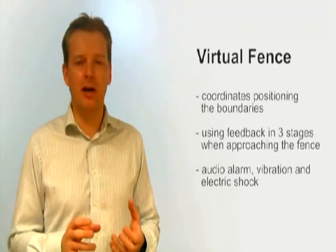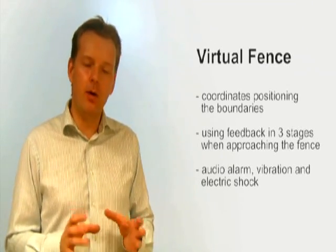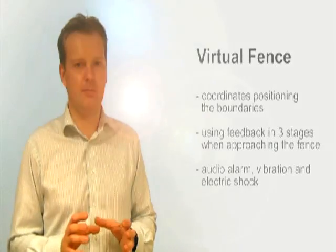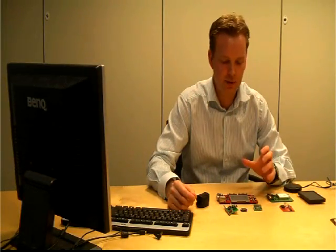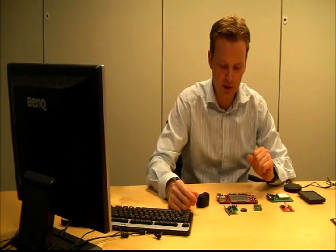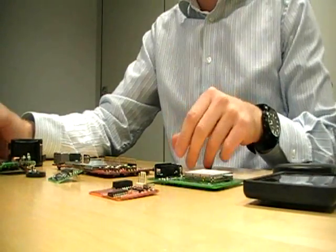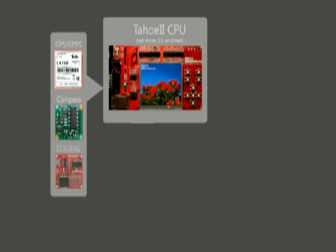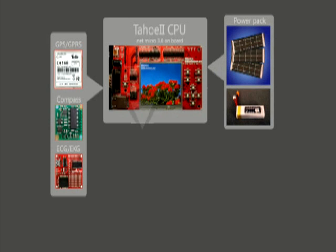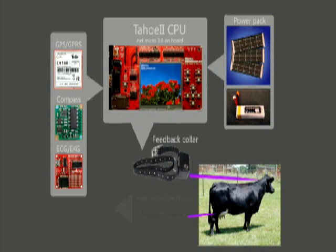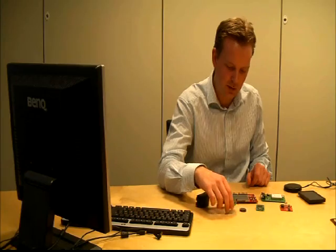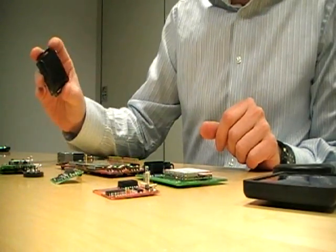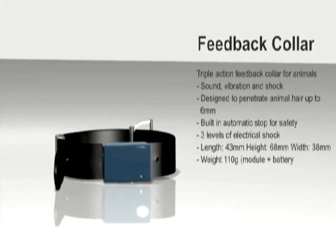We are going to see a couple of demonstrations and also a live test. I have here now all my devices — all the components for the device, and these are all interacting together. We have the main CPU with the .NET Microframework, a GPS, a GSM unit, a heart rate monitor, a compass, and a transmitter for sending signals to the feedback device.